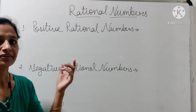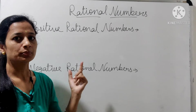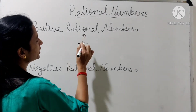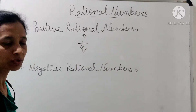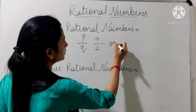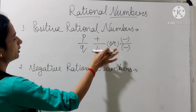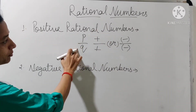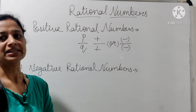Positive rational numbers और negative rational numbers क्या होते हैं? Positive rational numbers हमारे होते हैं जब numerator और denominator दोनों के signs same होते हैं — या तो दोनो positive हो और दोनो negative हो. When numerator and denominator both are having same signs, those are called positive rational numbers.